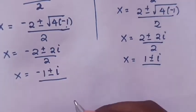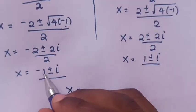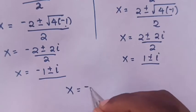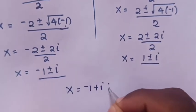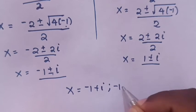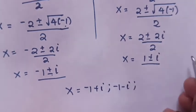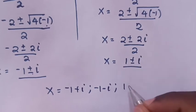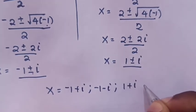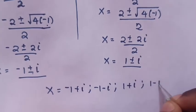Therefore, our answers for the solution are: x equals negative 1 plus i, x equals negative 1 minus i, x equals 1 plus i, and x equals 1 minus i.